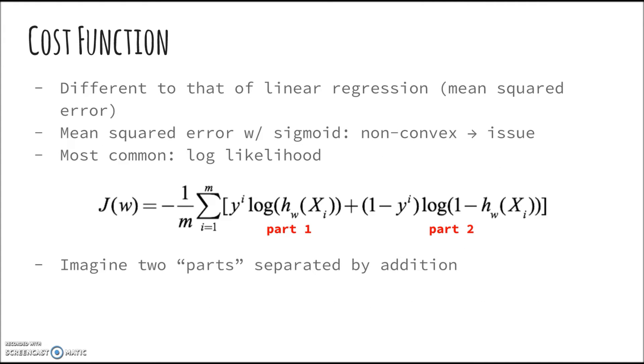Now what cost function do we use for logistic regression? Most commonly we use something much more complex and scary: the log-likelihood error function. This is different to the mean squared error function used in linear regression. But why?